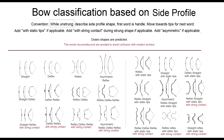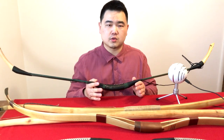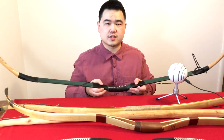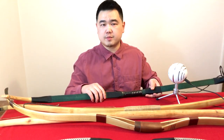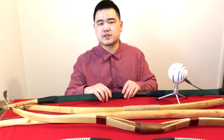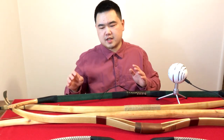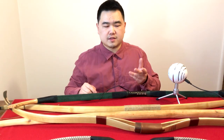My classification system is called bow classification based on side profile. It uses the side profile of the bow. When people usually associate with historical bows, they typically use culture instead of the shape of the bow. I don't particularly like this classification because the problem is a lot of bows have different designs in history, even by the same culture.